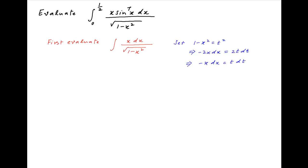Therefore the integral of x dx upon square root of 1 minus x squared is equal to the integral of minus t dt in the numerator and square root of t squared, or t, in the denominator. The t cancels and the value of this integral is equal to minus t plus the constant of integration. Substituting back, we get minus square root of 1 minus x squared plus the constant of integration.